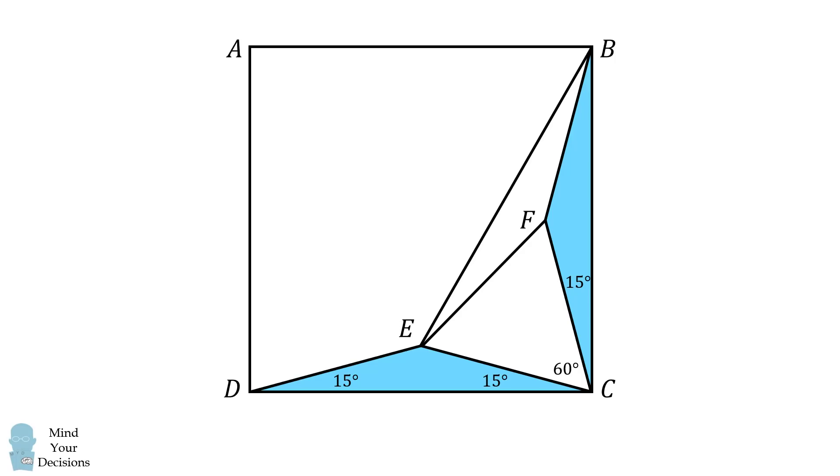Next, construct FE. By construction, CF and CE are congruent sides. Therefore, we have an isosceles triangle with a vertex angle equal to 60 degrees.